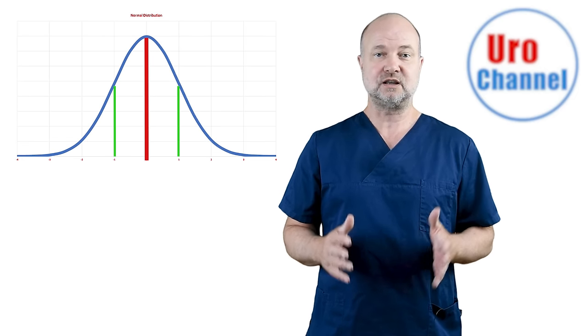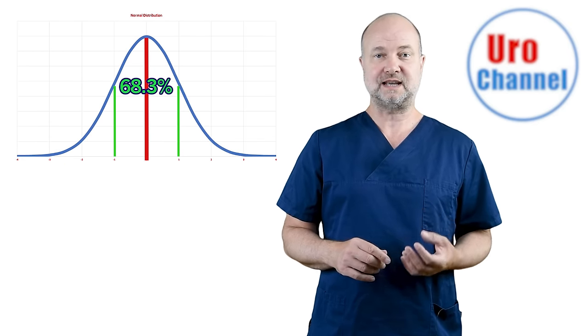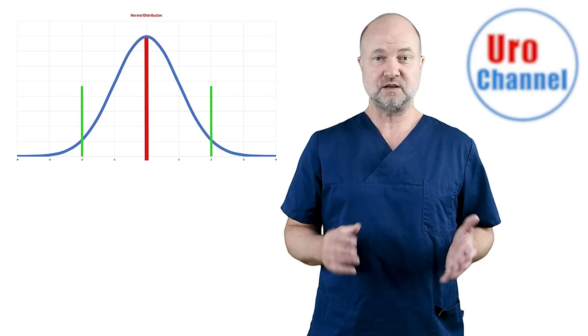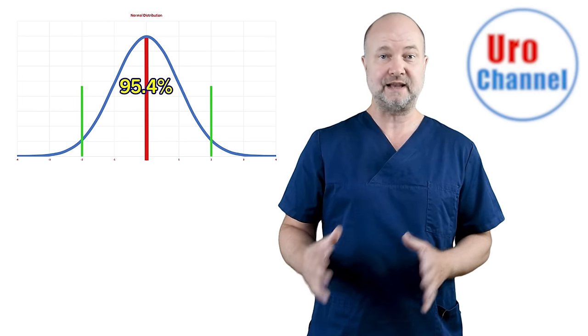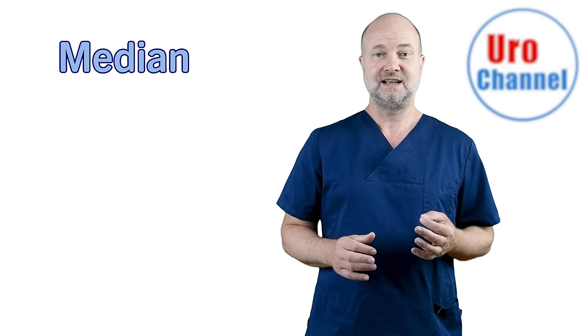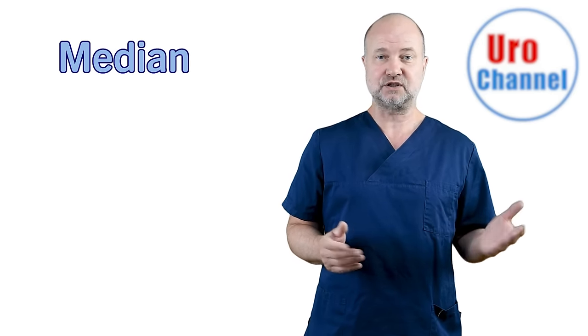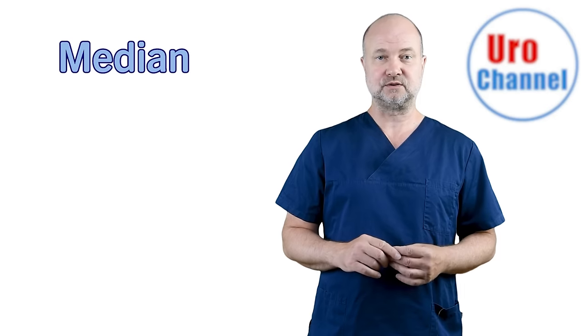The standard deviation tells us how dispersed the data is in relation to the mean value. Within one standard deviation above and below the average, 68.3% of all data are gathered. Within two standard deviations above and below, you will find 95.4% of all values. The median is a kind of average which is more robust to extreme values which would bring the average up or down. The median is the middle of the recorded values.